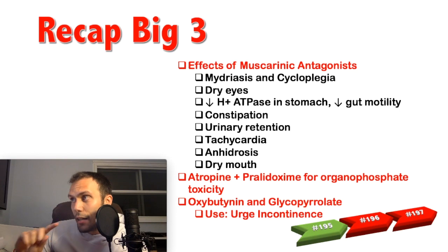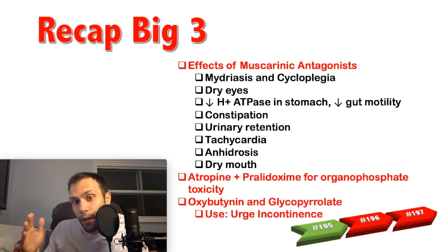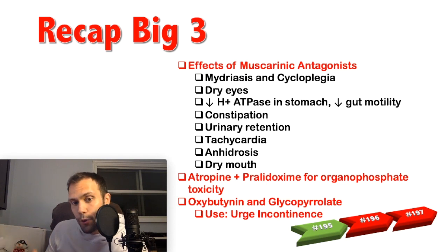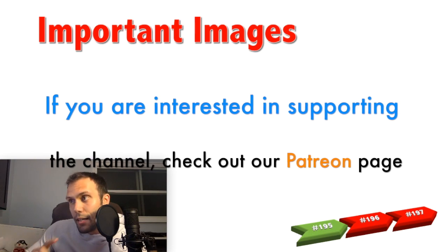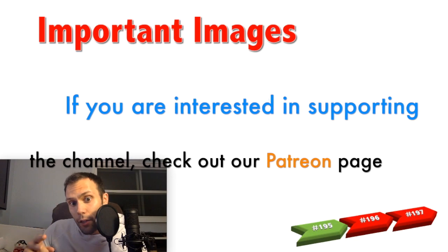To recap the big three: know the effects of muscarinic antagonists and your toxidromes — both cholinergic and anticholinergic. Remember atropine and pralidoxime for organophosphate toxicity, and always remove clothes and wash the patient first. Oxybutynin and glycopyrrolate are used in urge incontinence by exerting anticholinergic activity at the detrusor muscle. Also remember your pre- and post-ganglionic neurons and their innervations. Thank you for watching.